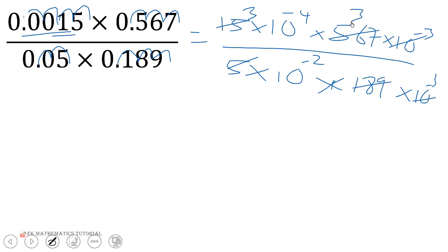So when you get that, we are left with 3 times 3 times 10 to the negative 4, all over 1 times 10 to the negative 2.